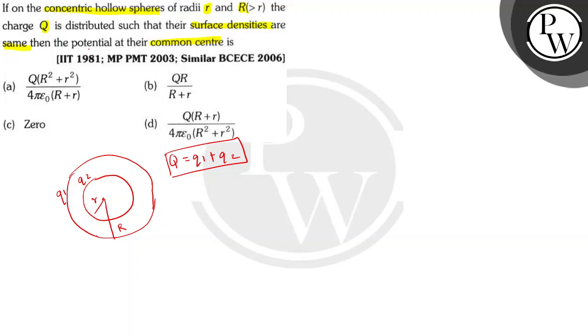We have to find the potential at their common center. So potential at the center, V center equals 1 upon 4π epsilon 0, that is the value of K, Q1 by R, plus 1 upon 4π epsilon 0, Q2 upon r.